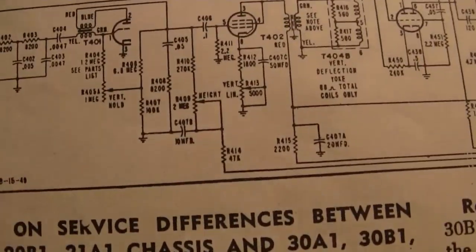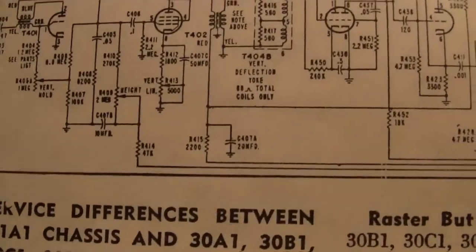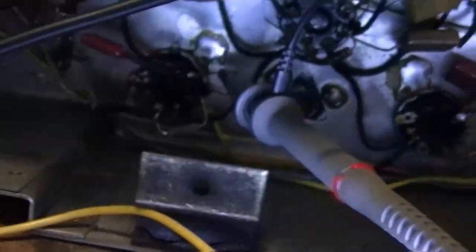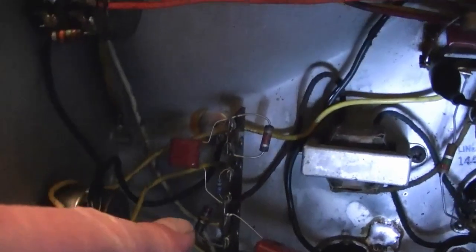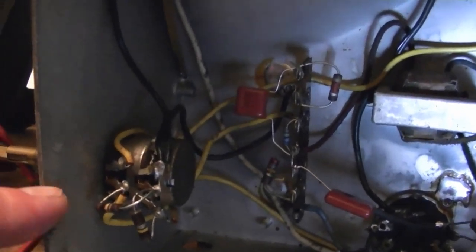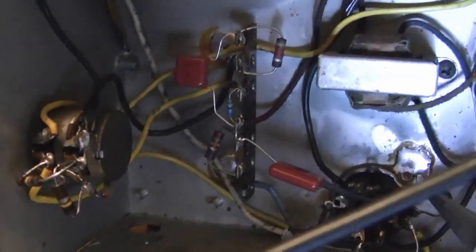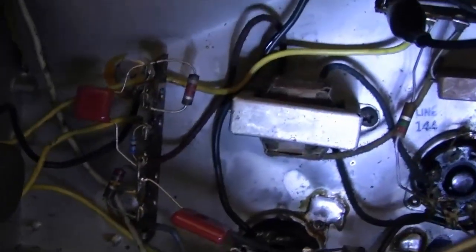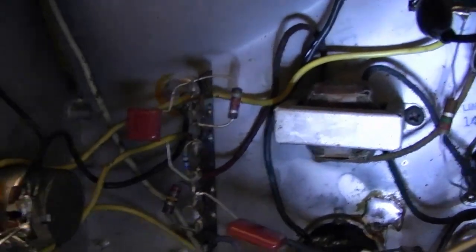And the vertical hold control there. I want to check these other parts too. The 270K and so on. That's the horizontal hold and vertical hold controls. I replaced one of those resistors and the others checked out okay at the time. But I can check them again.